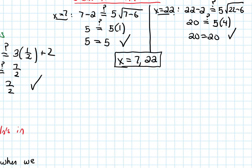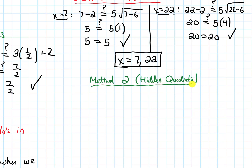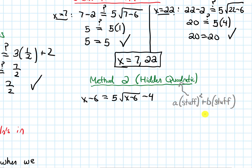Let's solve this problem one other way. Method 2 is going to recognize that this is what's called a hidden quadratic. The original equation was x minus 6 equals 5 times root x minus 6, minus 4. A hidden quadratic isn't a quadratic exactly — it just looks like one: a times some stuff squared, plus b times that same stuff, plus c equals zero. In this equation, x minus 6 is actually root x minus 6, squared.